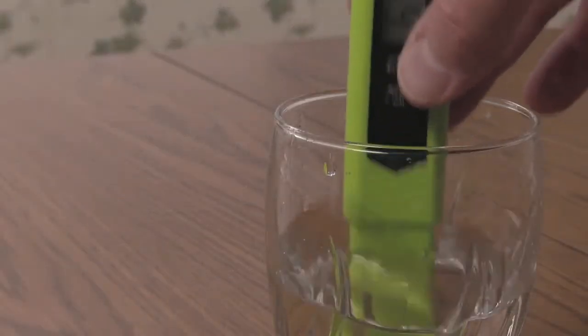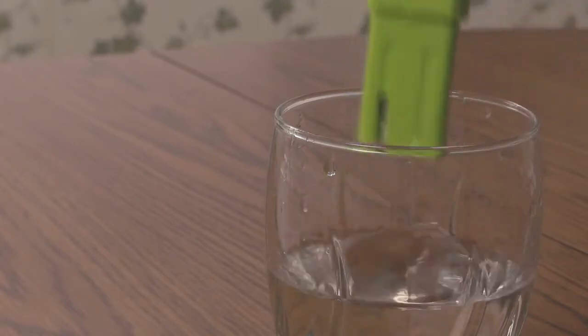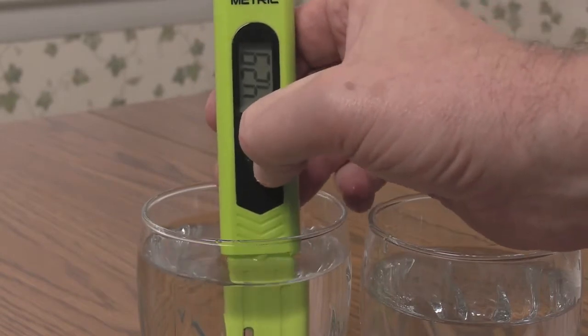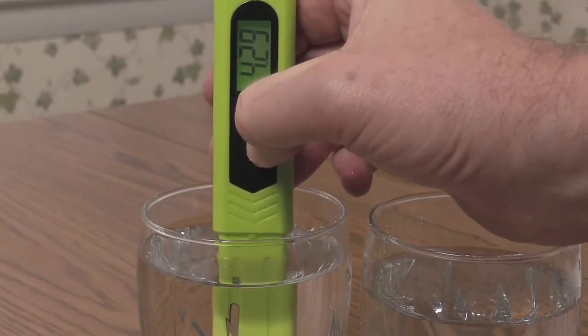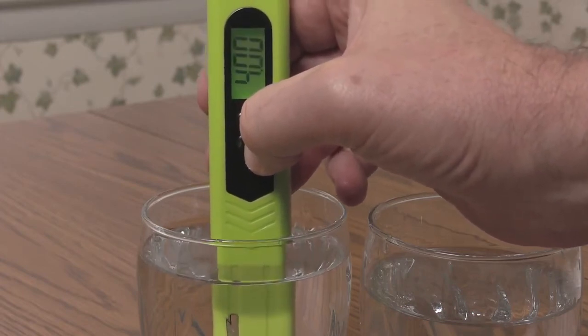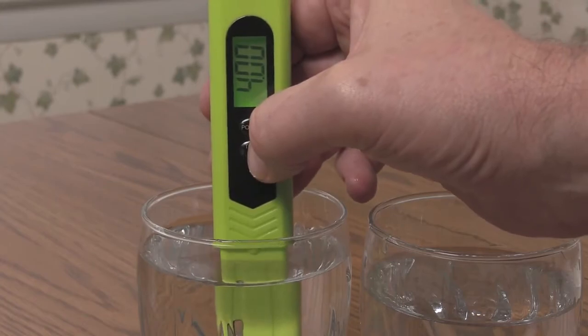give the probe a quick rinse in distilled water and place in the pH 4.0 solution. Press and hold the temp cal button for 5 seconds, release, then press and release the button once more. When the display stops flashing, the meter is calibrated and ready to use for most applications.